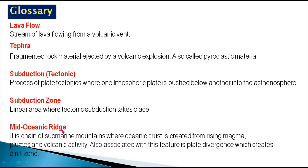Mid-oceanic ridges are chains of submarine mountains where oceanic crust is created from rising magma plumes and volcanic activity. They are also associated with plate divergence, which creates rift zones. Inside the oceans and seas we find different types of mountains called mid-oceanic ridges, which are formed because of magma eruption.